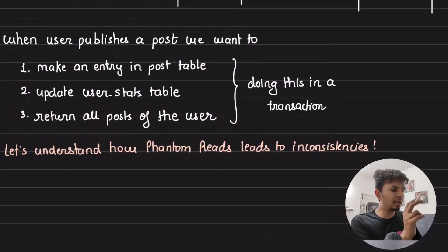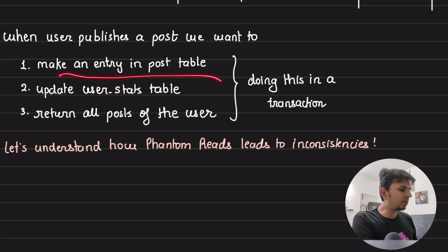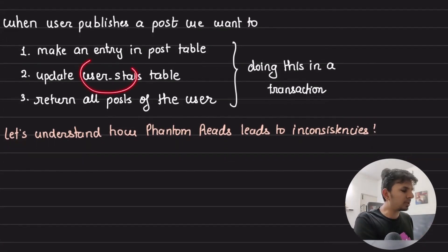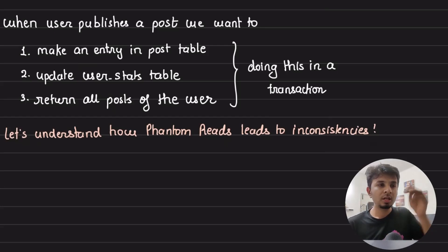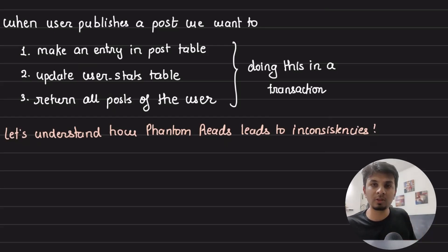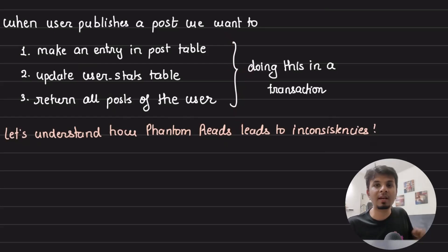In a real-world use case, you need a table like this so you can quickly render the profile of the user — you don't need to compute the total number of posts every time since you have the count handy. Whenever a user publishes a post, we need to do three things: first, make an entry into the post table; second, update the user stats table with count plus one; and third, as a hypothetical situation, do a SELECT of all posts made by that user to send in the response. Doing all three in one transaction is essential.